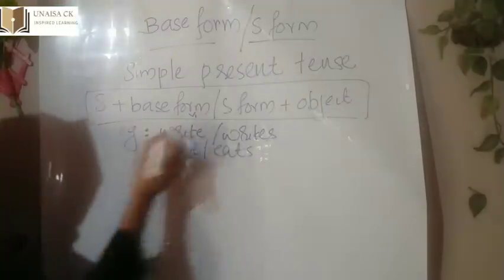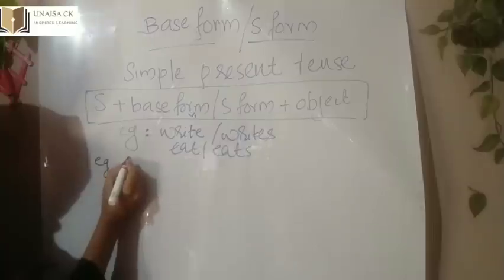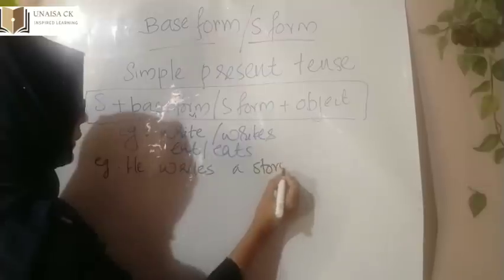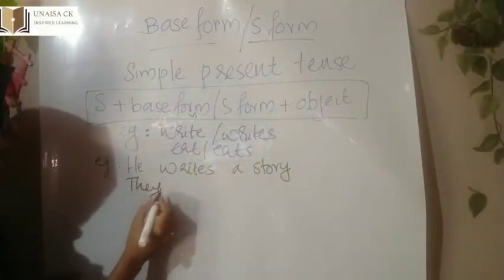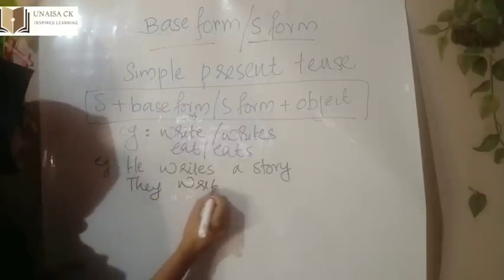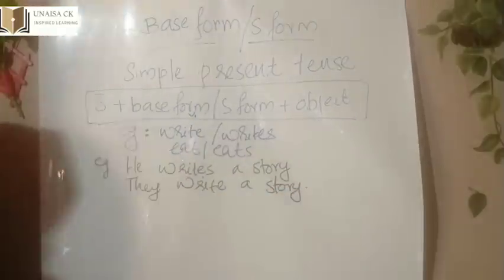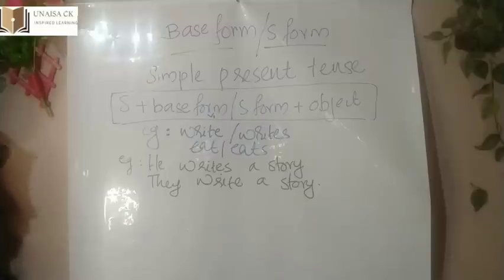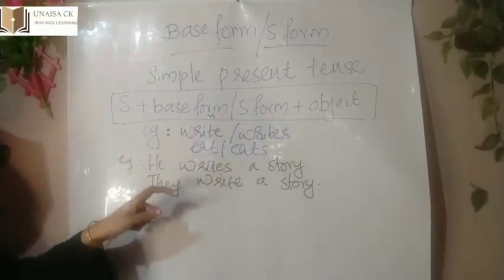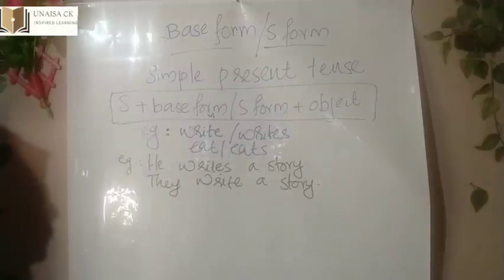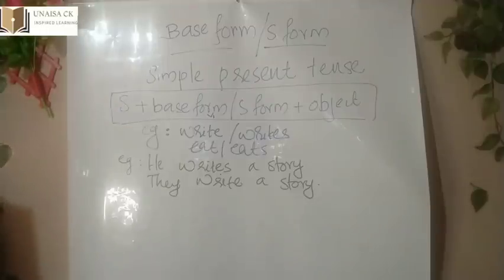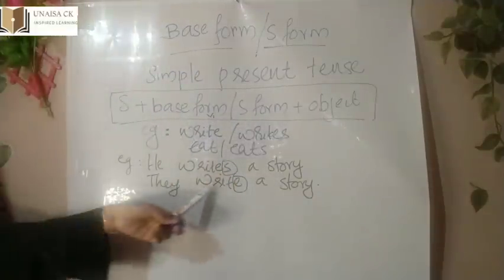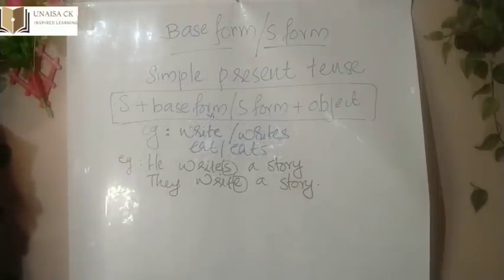I will give you an example. For example: 'he writes a story.' The same example written with the subject 'they': 'they write a story.' What is the difference? Both sentences are written in simple present form. We used the verb 'write' in both sentences, but in one sentence we used 'writes' and in the other sentence we used 'write'. Have you got why we write so?